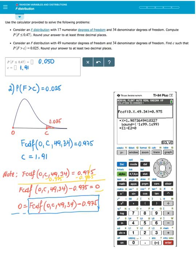Just use again, second vars to type in your FCDF with the given parameters, press enter. Then don't forget to subtract the area of 0.975. Press enter, press alpha enter again, and it should give you the same solution that I obtained using this newer version of TI-84.